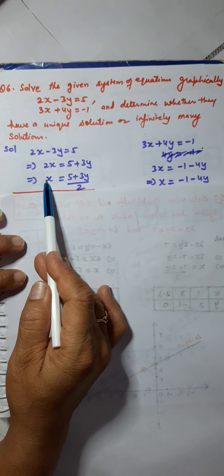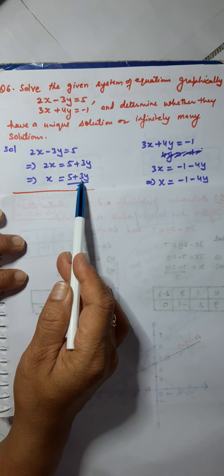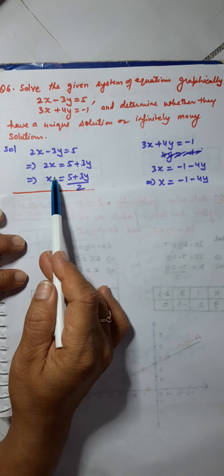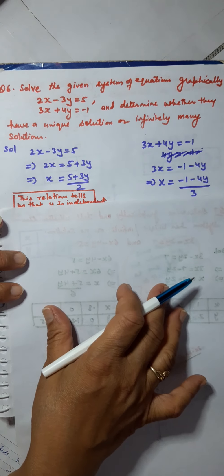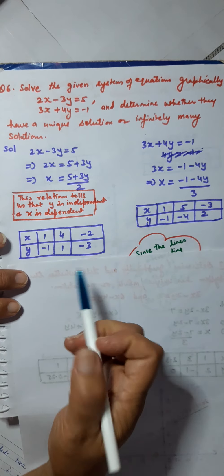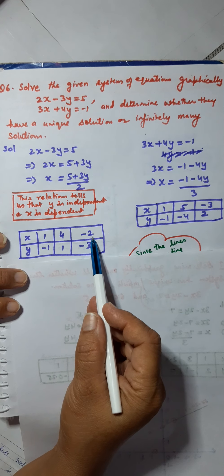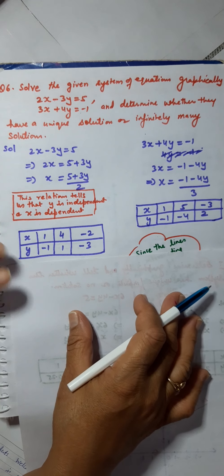What have I done here? I have converted x into a dependent variable, and y is an independent variable, because values of x will depend on the values of y. So I will assume some values of y and then calculate the values of x. This is the solution box that I have got for this equation.